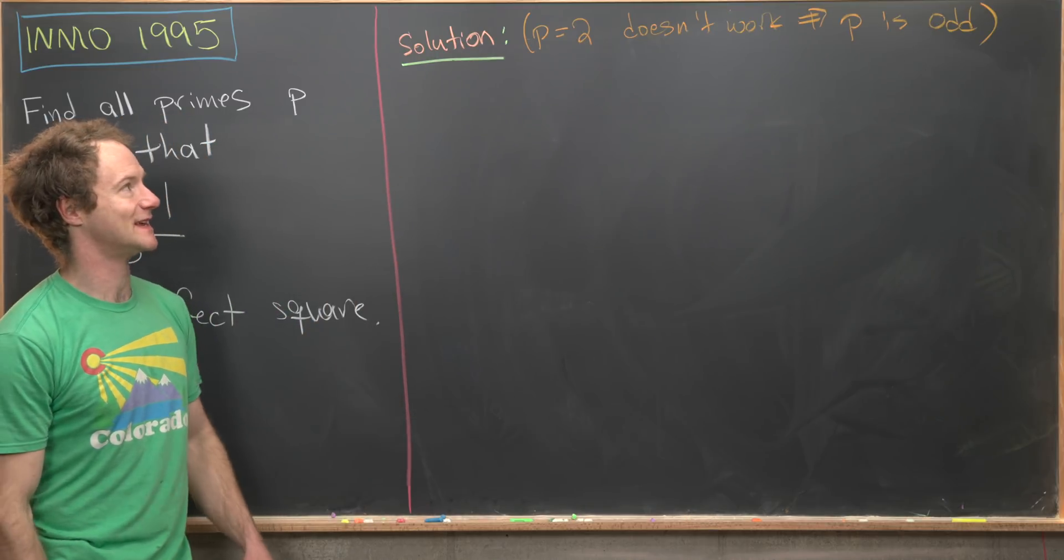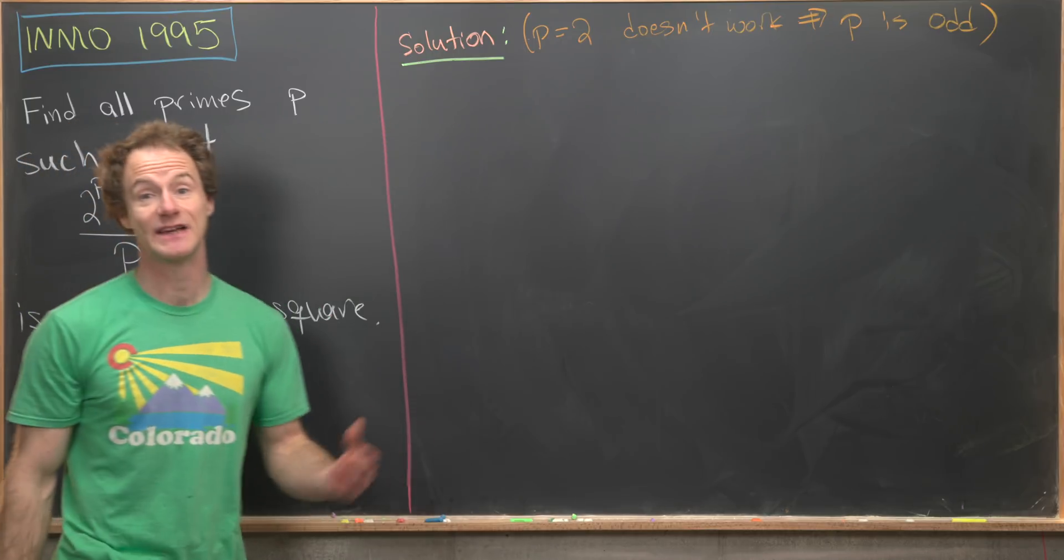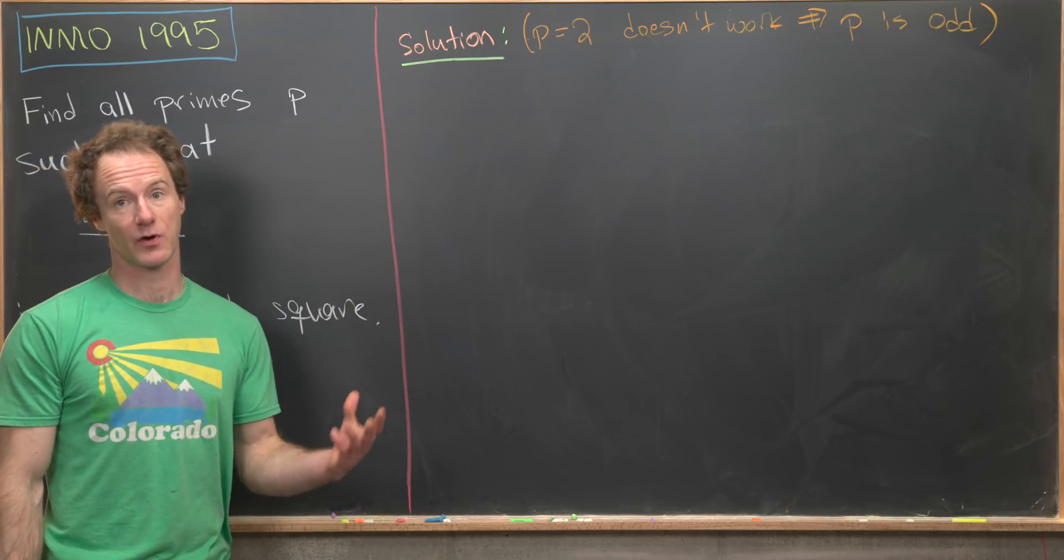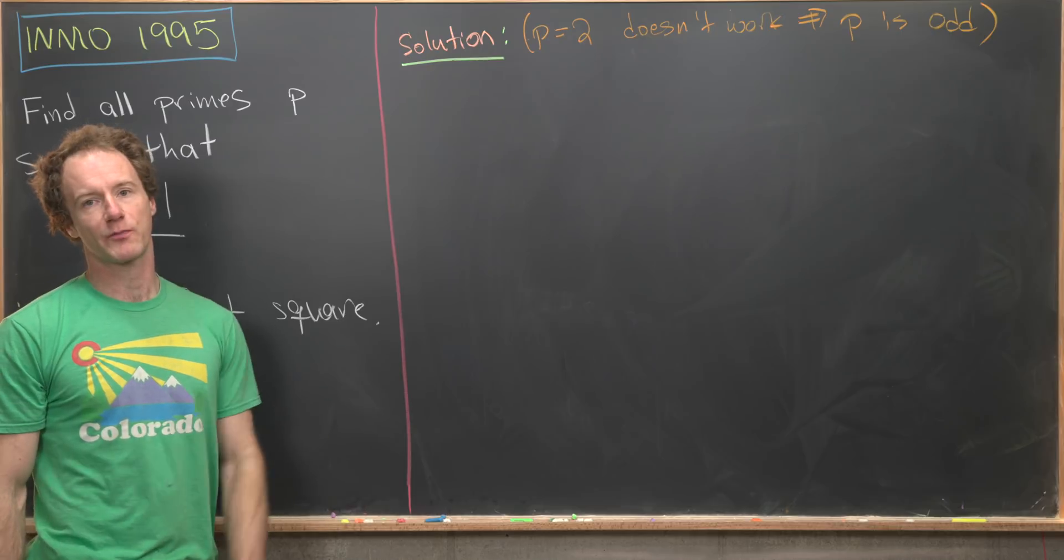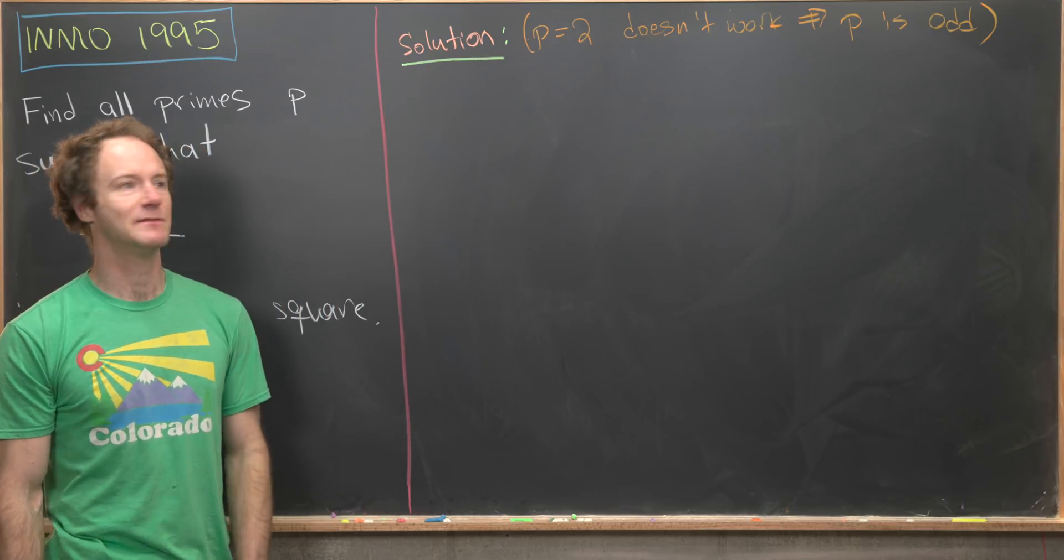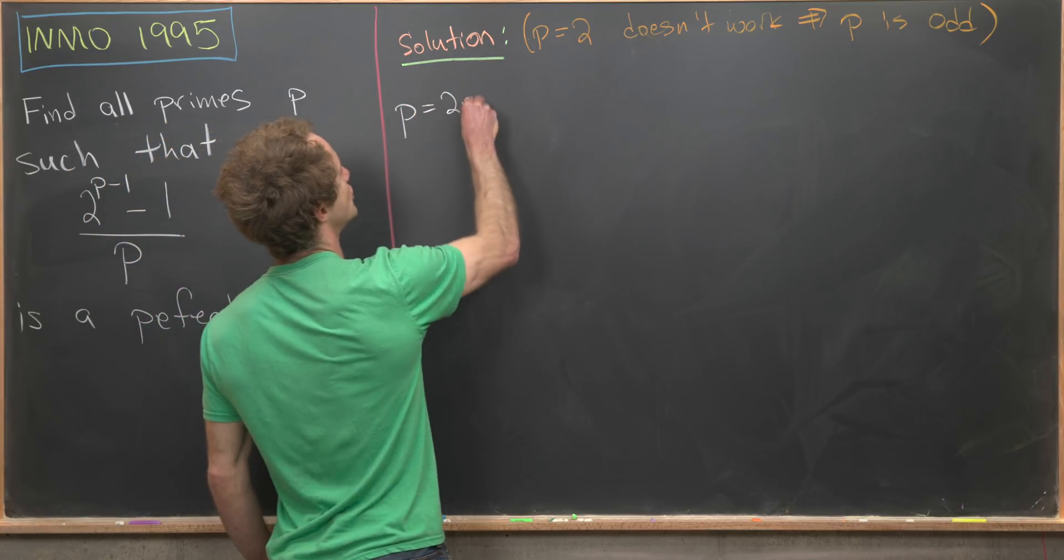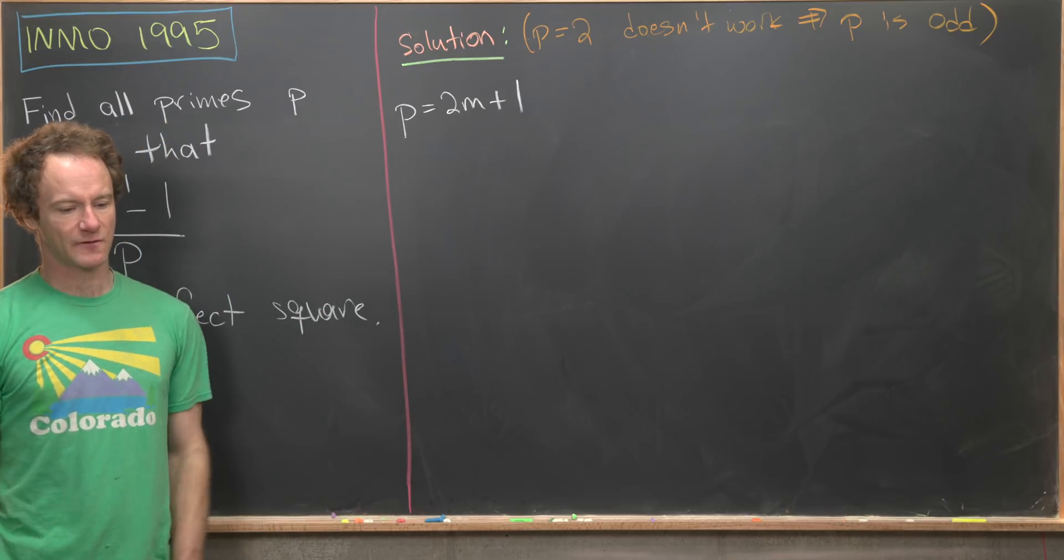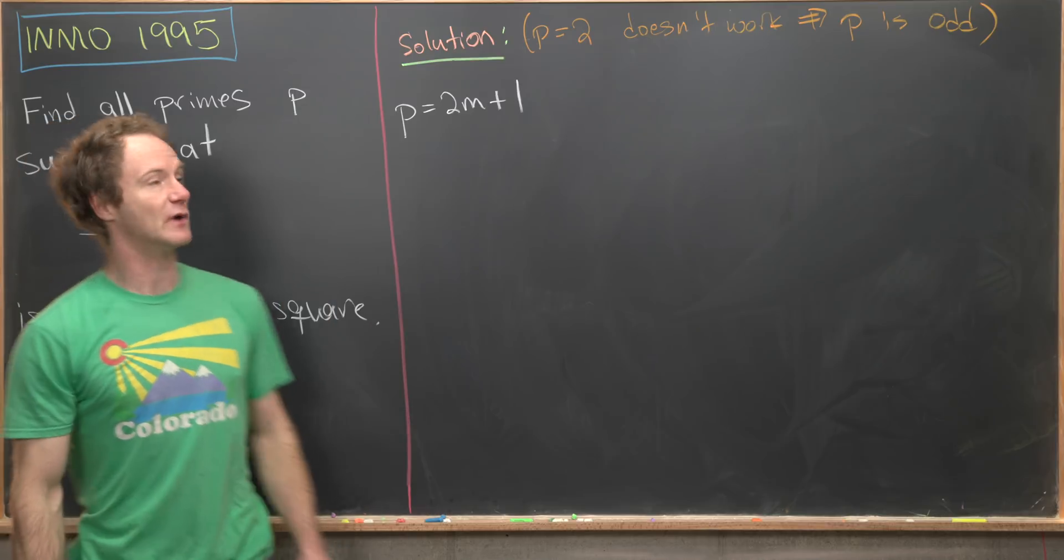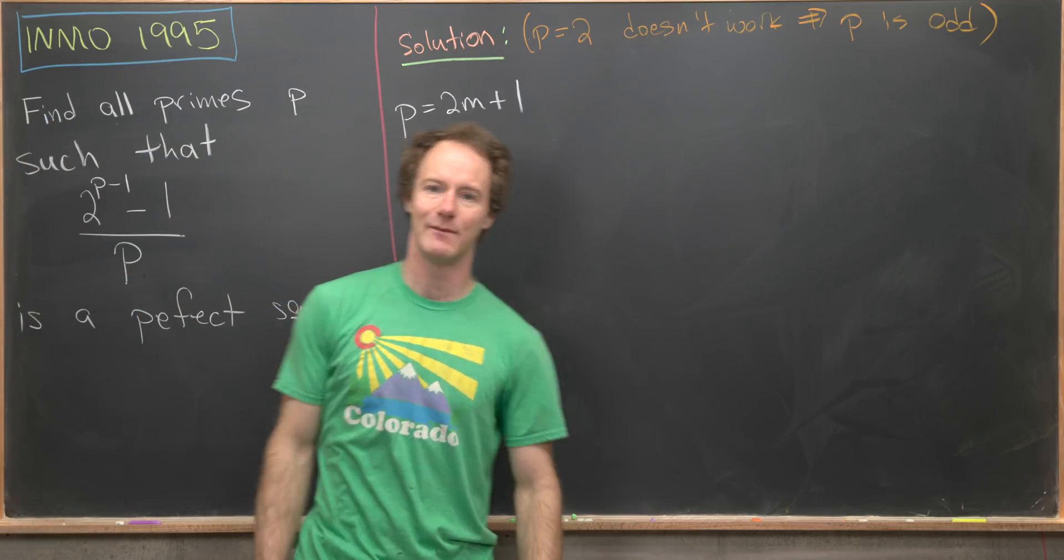On the last board, we noticed that p equals 2 does not work. You guys can easily check that. You don't even get an integer in that case. But that implies that p is another prime number, but all other prime numbers are odd. So we can start with that assumption that p must be an odd number. So let's go ahead and write p as 2m+1. It's the standard form of an odd number.